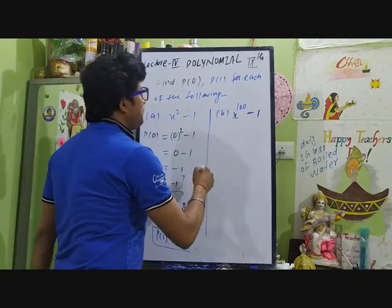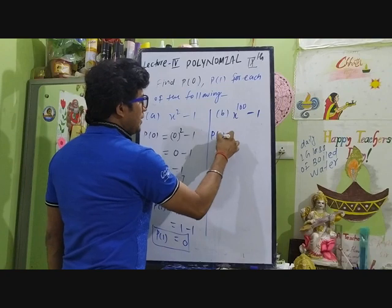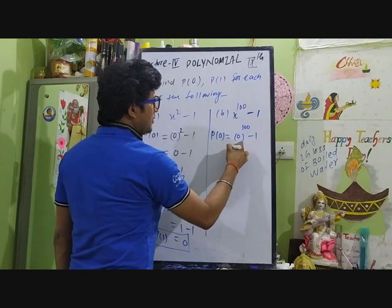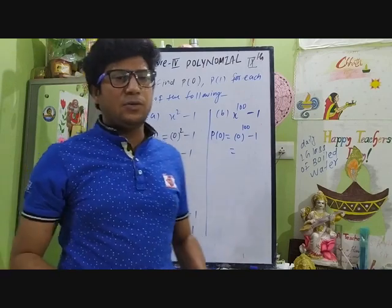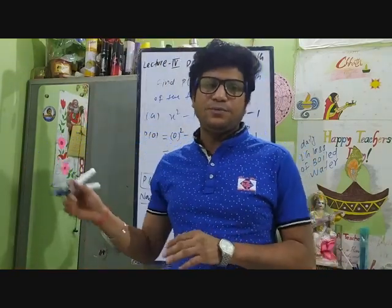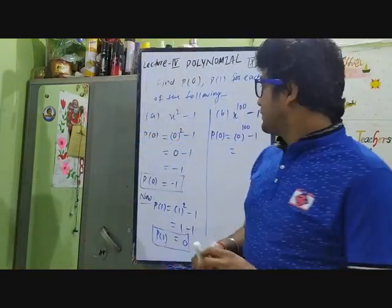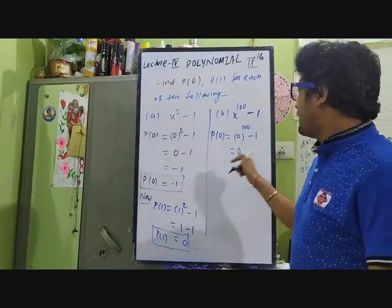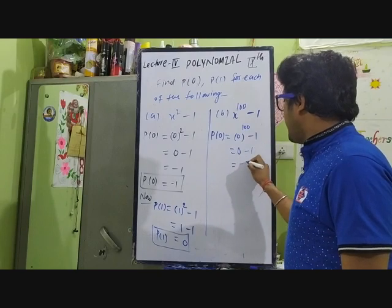For the second polynomial x^100 - 1, p(0) = 0^100 - 1. Zero to the power of 100 is 0, so 0 - 1 = -1.